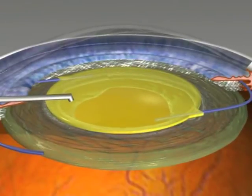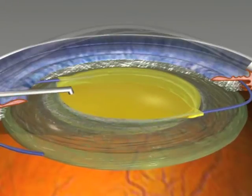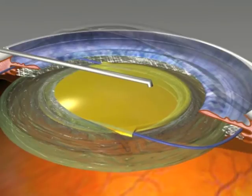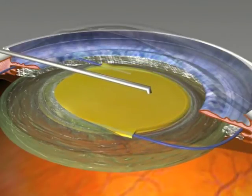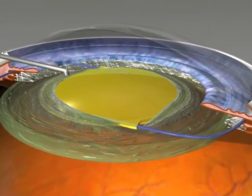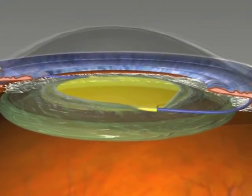To manage loose sulcus IOLs I make an opening in the membrane if there's not one there already to be able to use optic capture. Sometimes there's a PC opening that one has to enlarge appropriately to achieve optic capture.